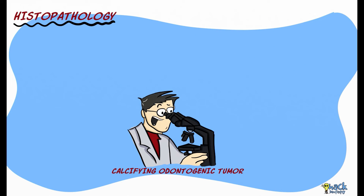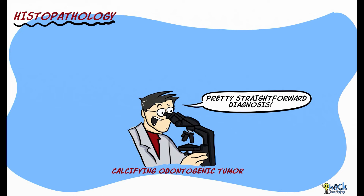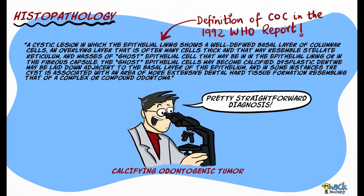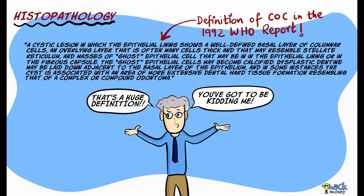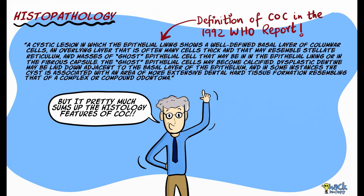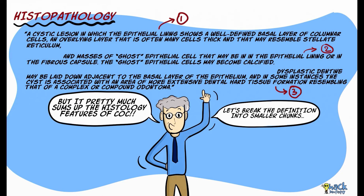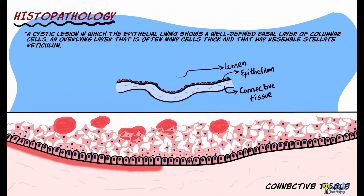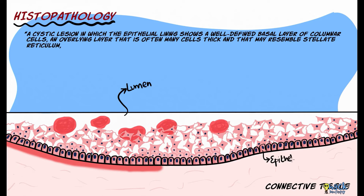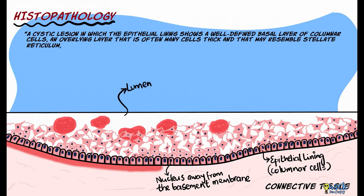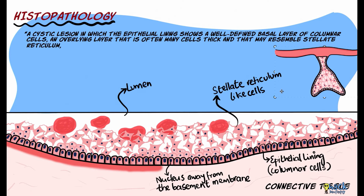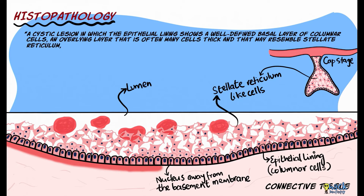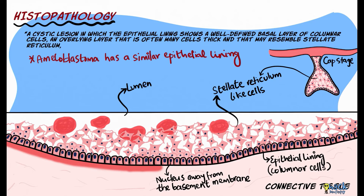The histological features of Calcifying Odontogenic Cysts are characteristic and straightforward to diagnose — this was essentially the WHO 1992 classification definition of the lesion. As a cystic lesion, it has a lumen and an epithelial lining consisting of a palisaded layer of columnar cells with nuclei polarized away from the basement membrane. The overlying cells resemble stellate reticulum seen during the cap stage of tooth development and are separated by intercellular edema. This epithelial lining closely resembles that seen in ameloblastoma.